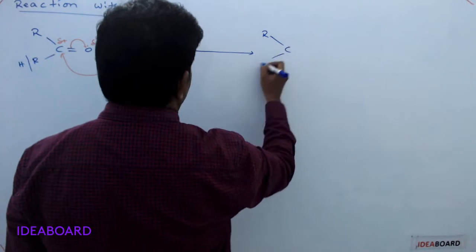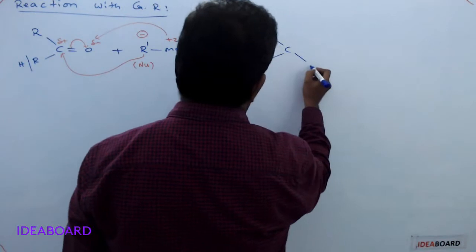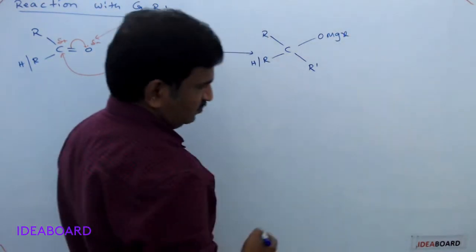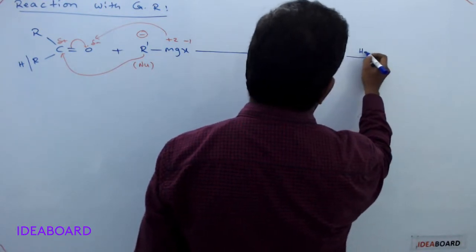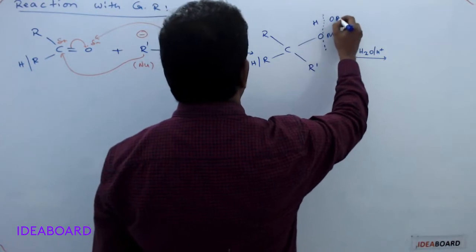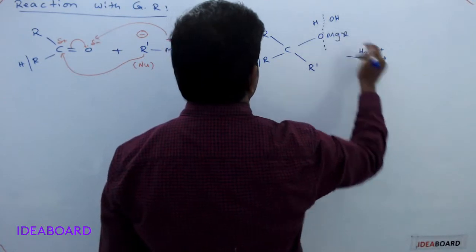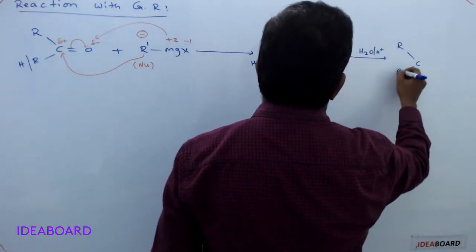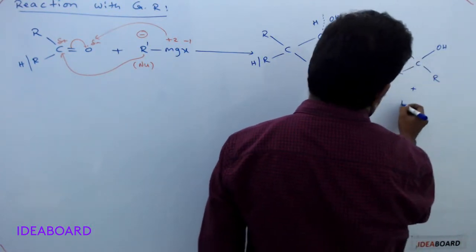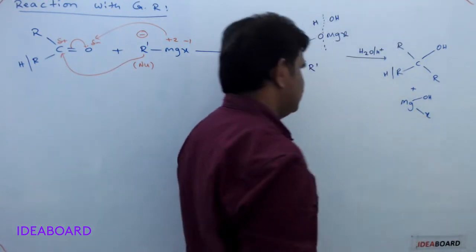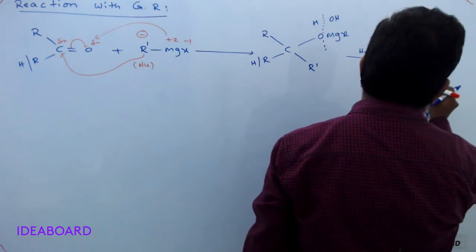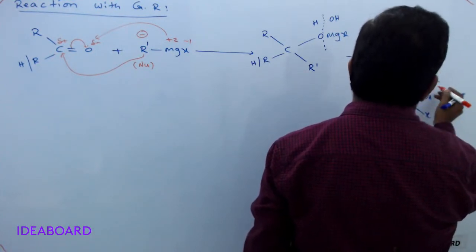What is formed here is R'C(R' or H) with an alkyl group added from the Grignard reagent, and O-MgX is formed as an intermediate. This undergoes hydrolysis — H and OH groups are added. The product is R'C(R')(R)OH, plus MgOHX. A carbon having an OH group means it is an alcohol. So the main products of Grignard reagent reaction with aldehydes or ketones are alcohols.